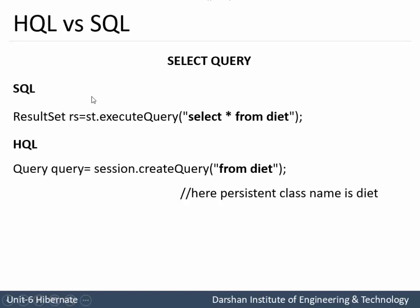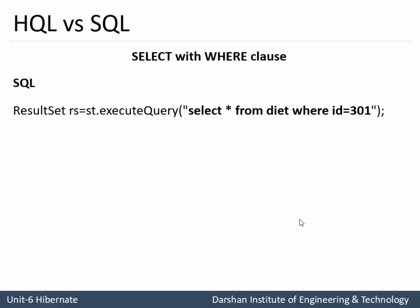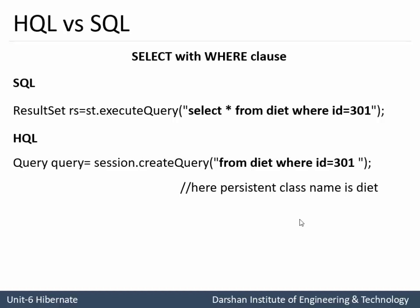Next is the select query with a WHERE clause. In SQL, we write: 'select * from table_name where id = 301'. In HQL, using session.createQuery, instead of only specifying the persistent class name, we also specify the WHERE clause: 'from DIET where id = 301'. Here again, DIET is a persistent class mapped with the RDBMS table DIET.